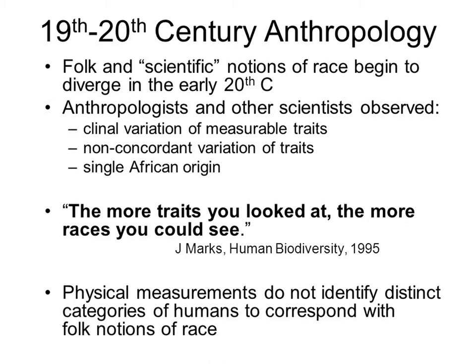Anthropologists and other scientists have started to observe the clinal variation of measurable traits. To put it roughly, if you were to take a walk from Nairobi in Africa all the way up to Stockholm in northern Europe, there's not going to be an area where you all of a sudden cross into the land of white people. What you're going to notice is that people closer to Nairobi have very dark skin colors, and as you move toward Stockholm, those skin colors get lighter and lighter as you make your way further north. That's what we mean by clinal variation.